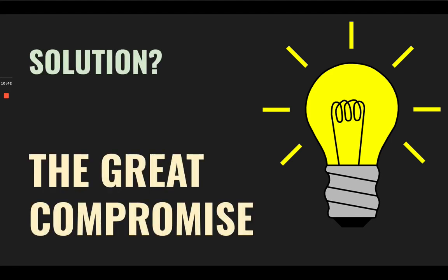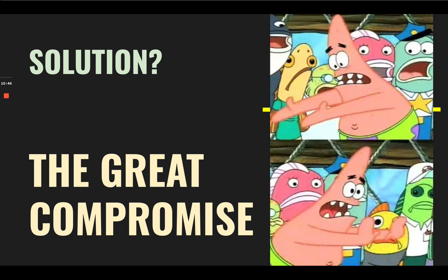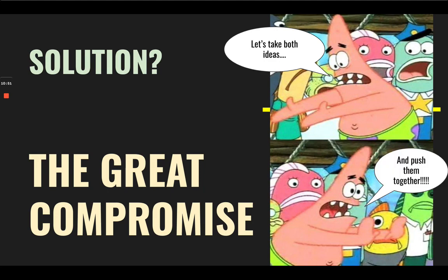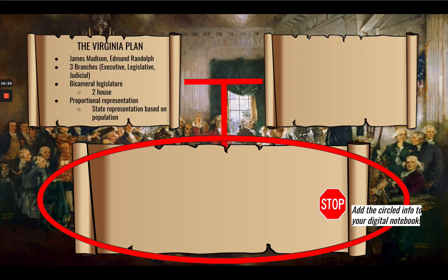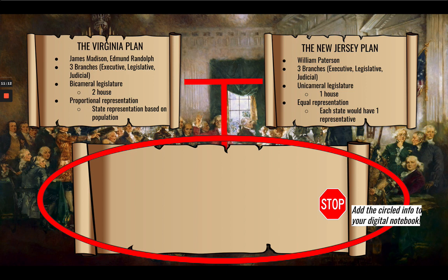So what is our solution? The Great Compromise — also known as the Connecticut Compromise — is the solution. Let's take both ideas and push them together. The Virginia Plan, by Madison and Randolph, proposed three branches of government and a bicameral legislature with proportional representation, meaning both houses would be filled with representatives based on the state's population.